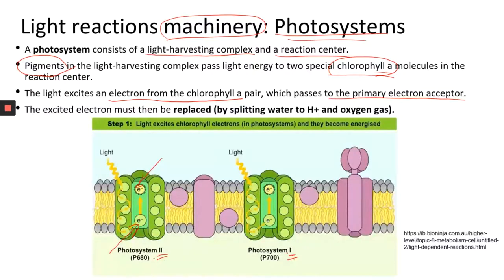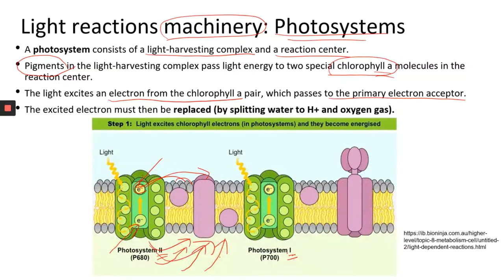The excited electrons are passed on to other membrane enzymes and eventually used to generate the things needed for step two. These electrons leave the chlorophyll molecules, so you need to replace them so more electrons can get excited and be passed on in the reaction pathway. What we do is split water into hydrogen and oxygen gas. In that process, oxygen is oxidized — it loses electrons — and those electrons come to replace the ones lost from excitation.